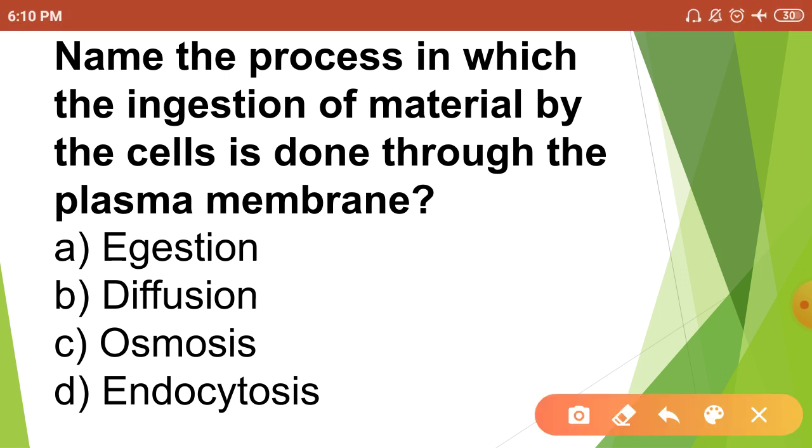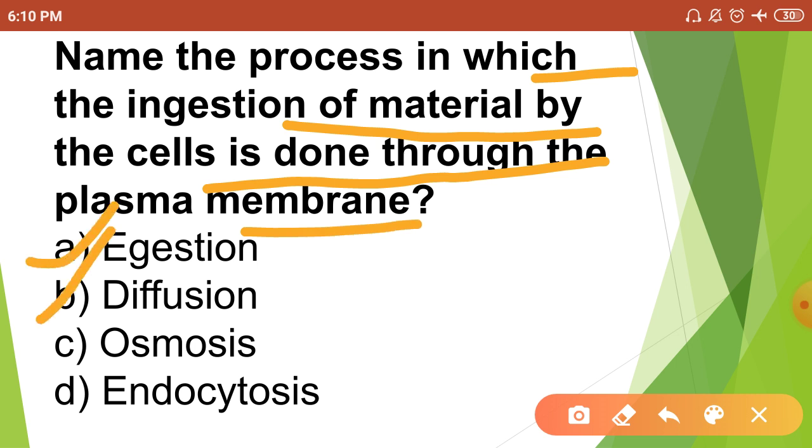Question: Name the process in which the ingestion of material by the cell is done through the plasma membrane. Options are: egestion, diffusion, osmosis, and endocytosis.